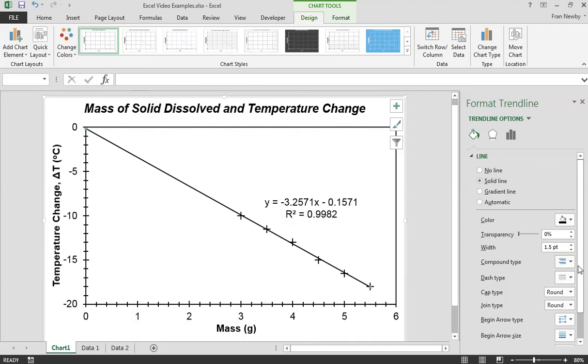We can change the width of the line here. We can decide to make it an arrow if we really want to, but something like this is probably going to be what we want to do.